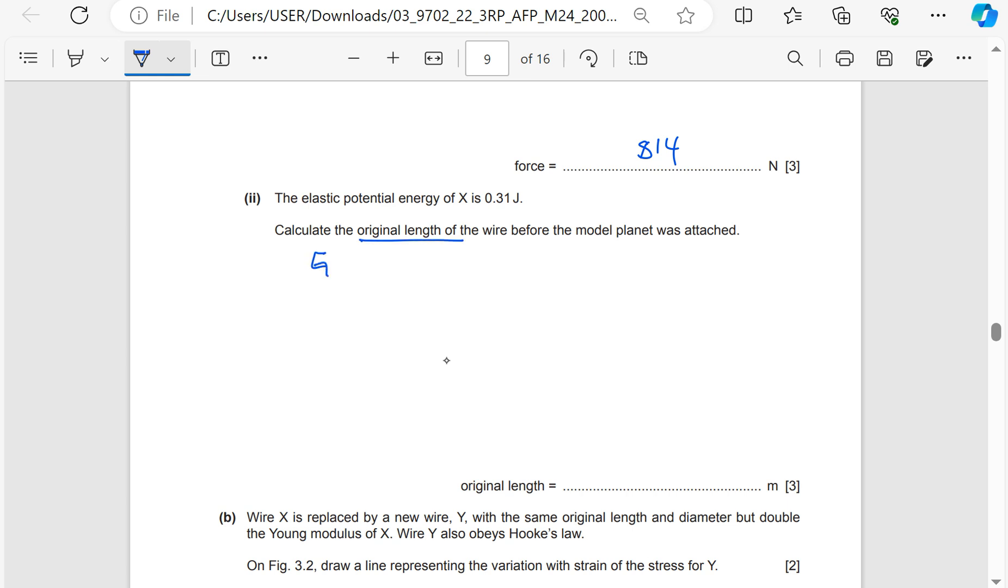So we said elastic potential energy is equal to 1 over 2 times Fx, which meant that X was equal to twice elastic potential energy divide by F. This is 2 times 0.31 divide by F, which F is 814. So this was X, and this gave us 7.6 times 10 to the power of minus 4 meters. That was not the answer to this question. This was the extension.